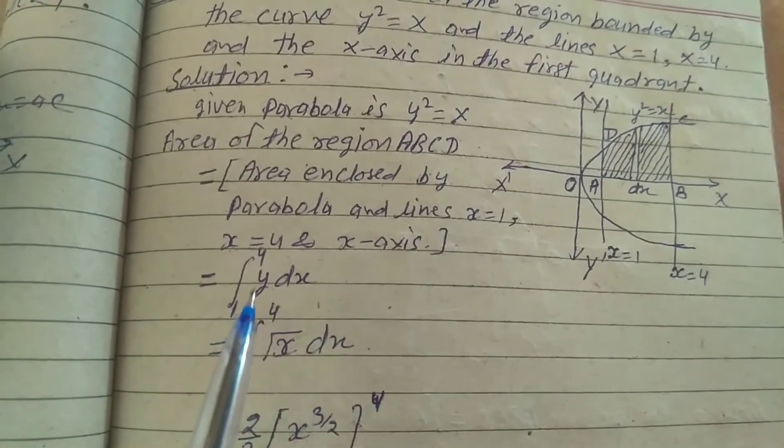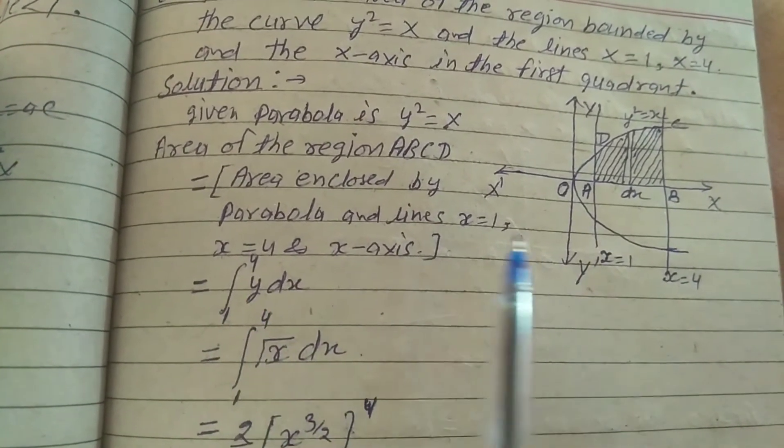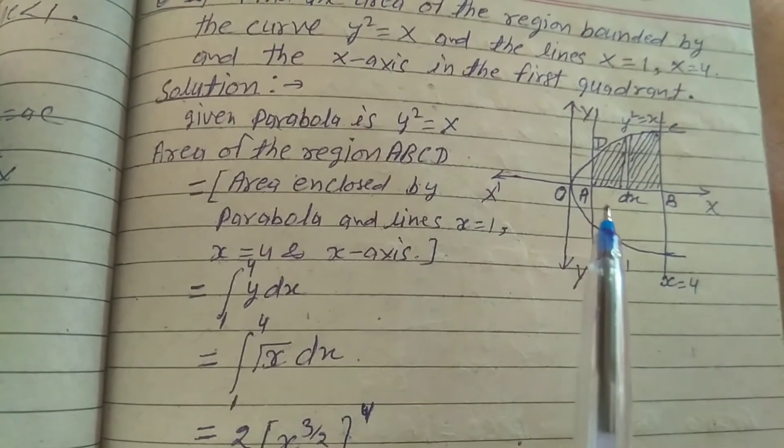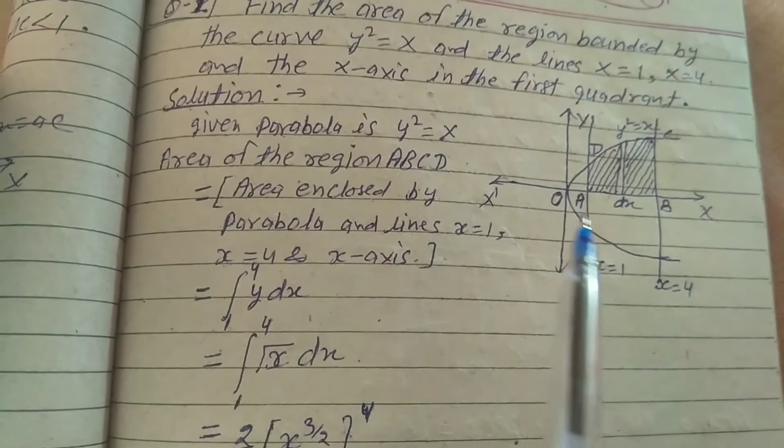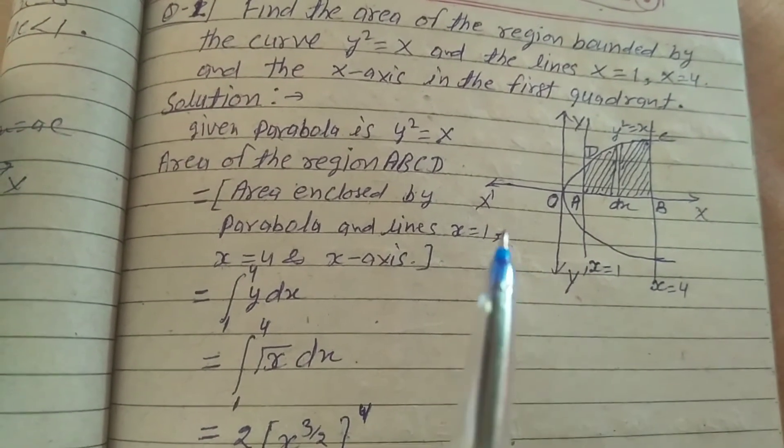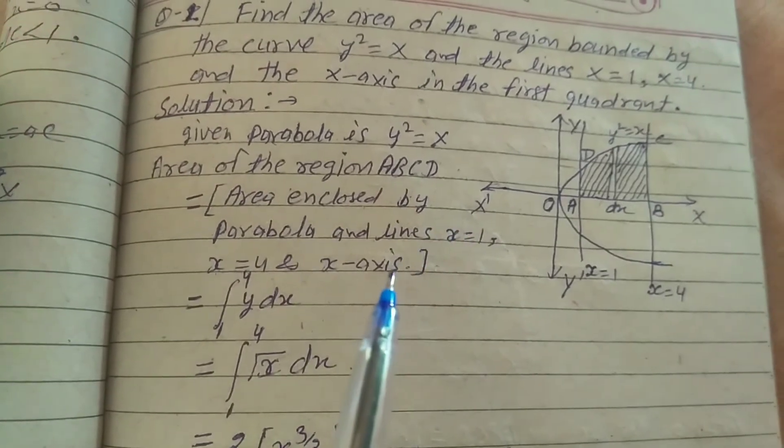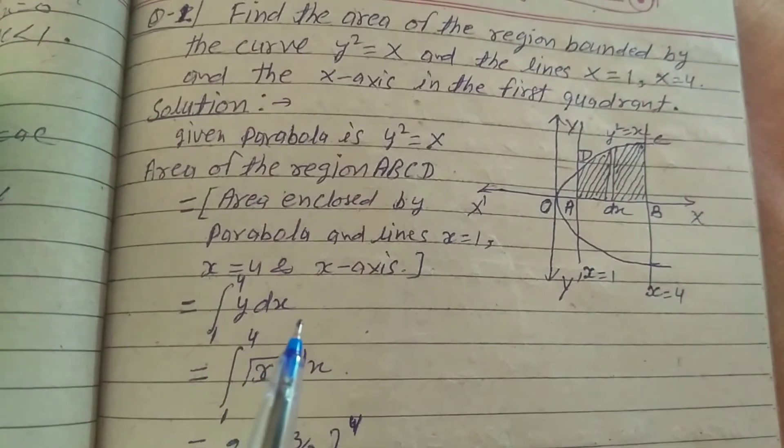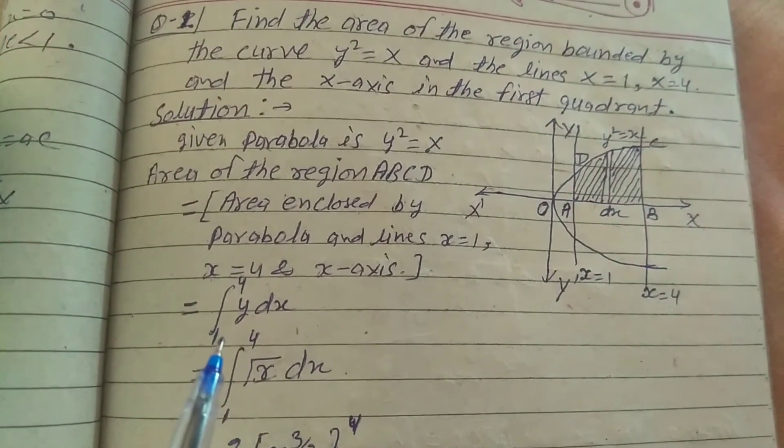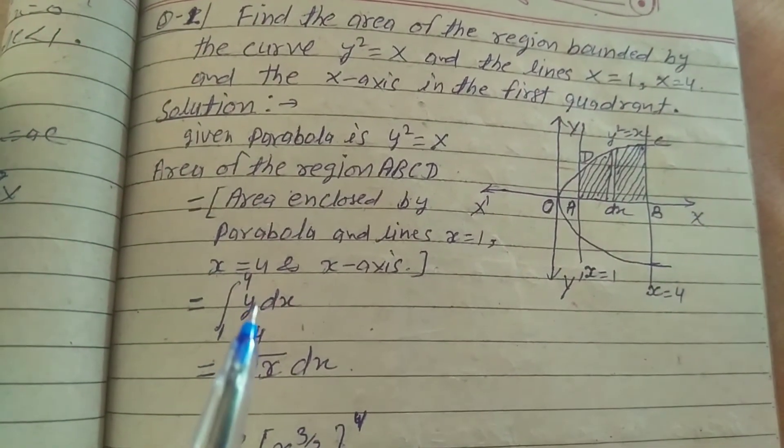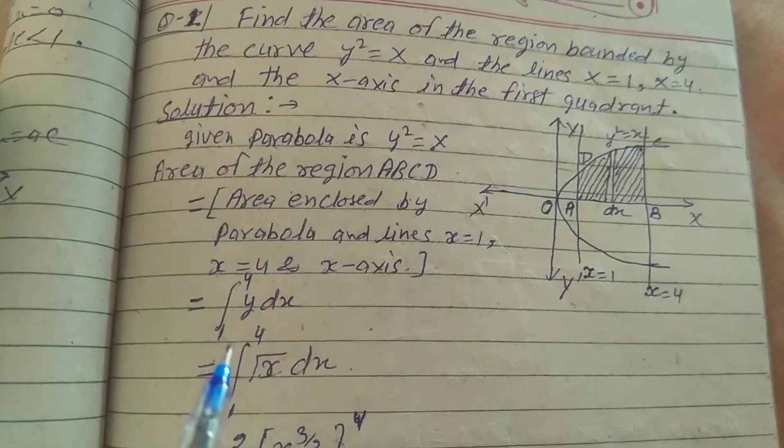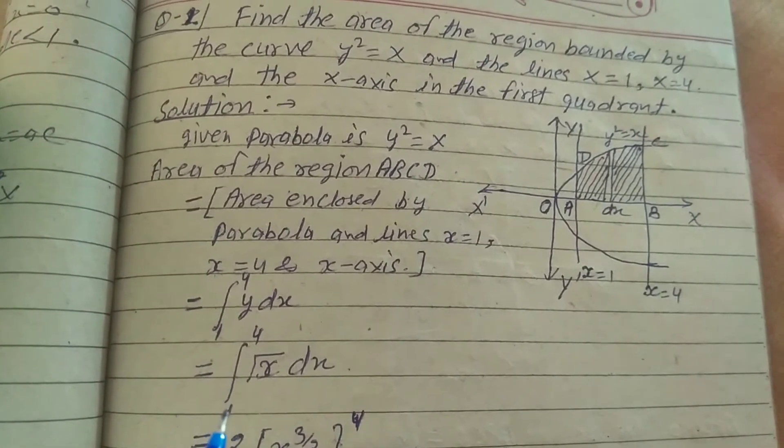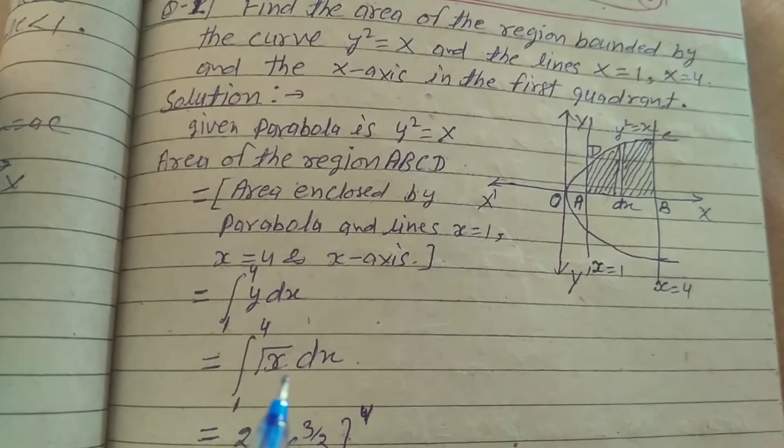It is equal to integration 1 to 4 y dx, because differentiation with x-axis. Curve value here put in form of x, so it equals integration 1 to 4 root of x dx. Y value is input here.